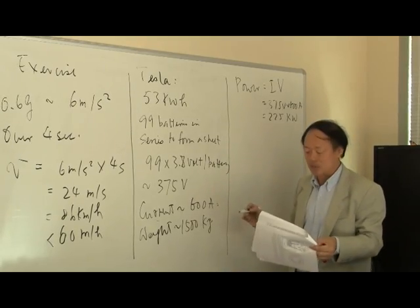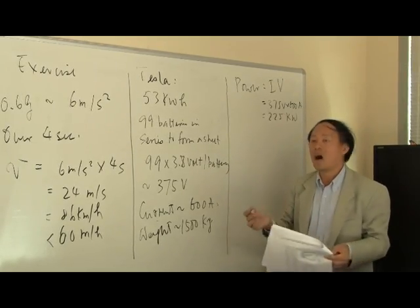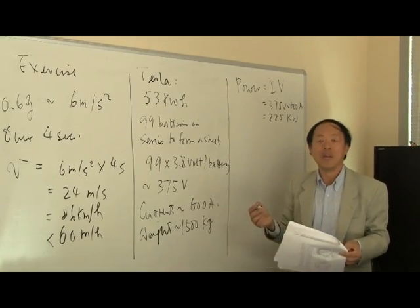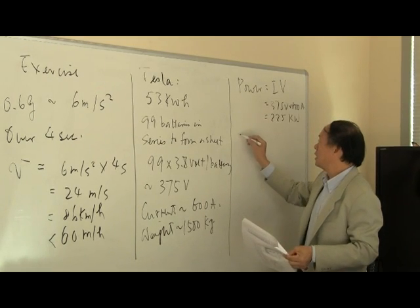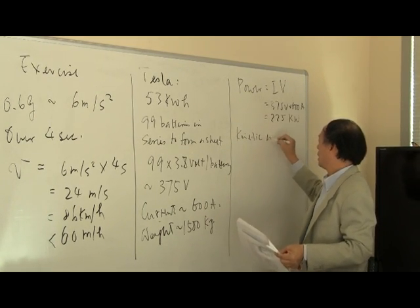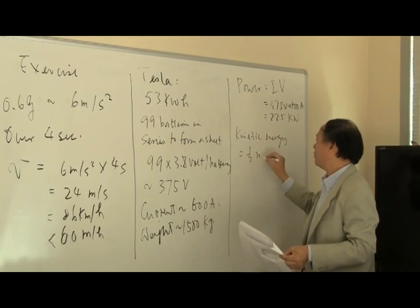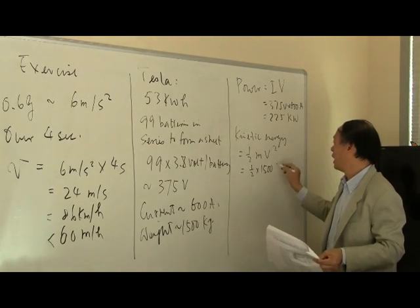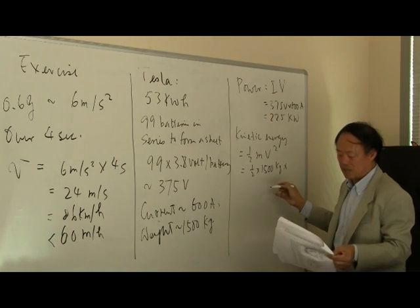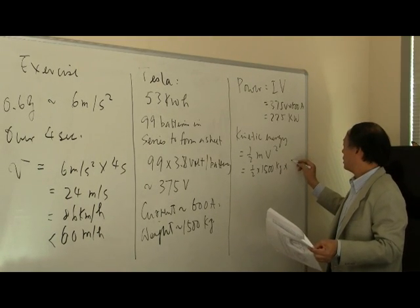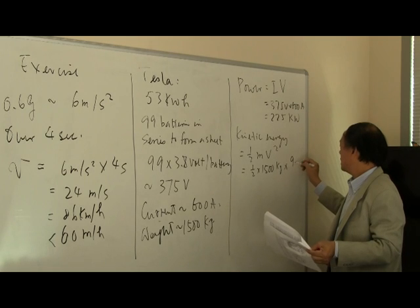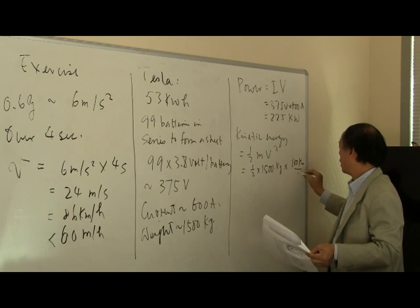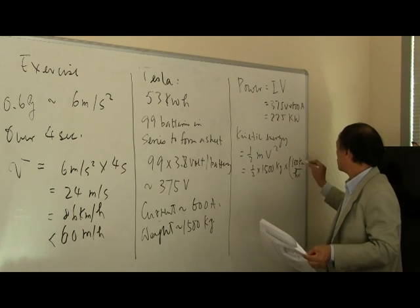Now another thing we're going to do is to calculate the kinetic energy of the car when it reaches 60 miles an hour or roughly 90 kilometers per hour. Now the kinetic energy, as we know, is equal to one-half of mv squared. So it's equal to one-half times 1,500 kilograms times velocity, in this case here, would be roughly about 90, let's say, let's just keep it at 100 kilometers per hour squared.